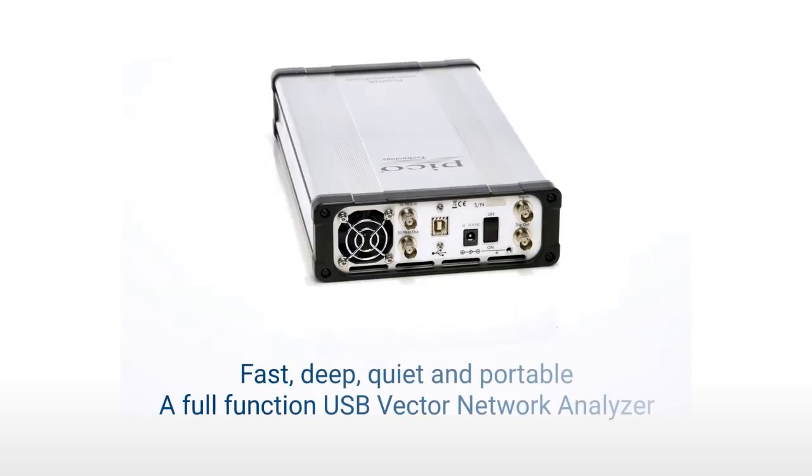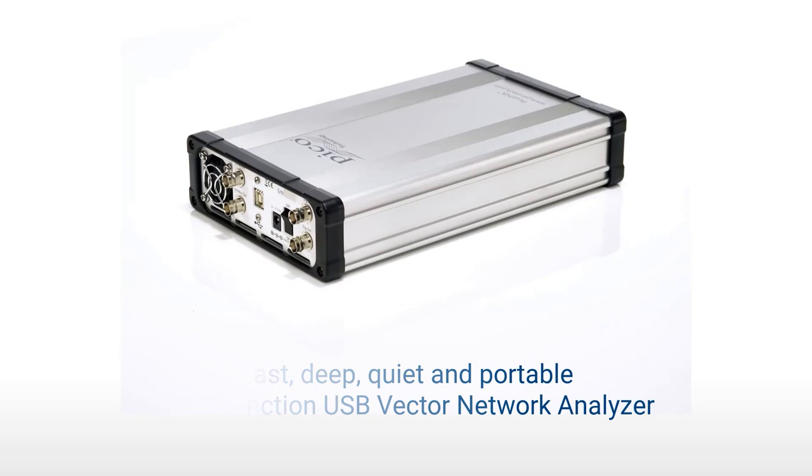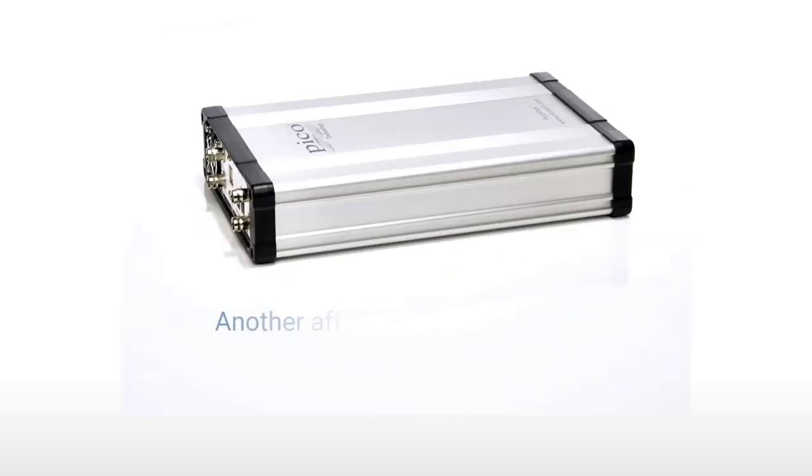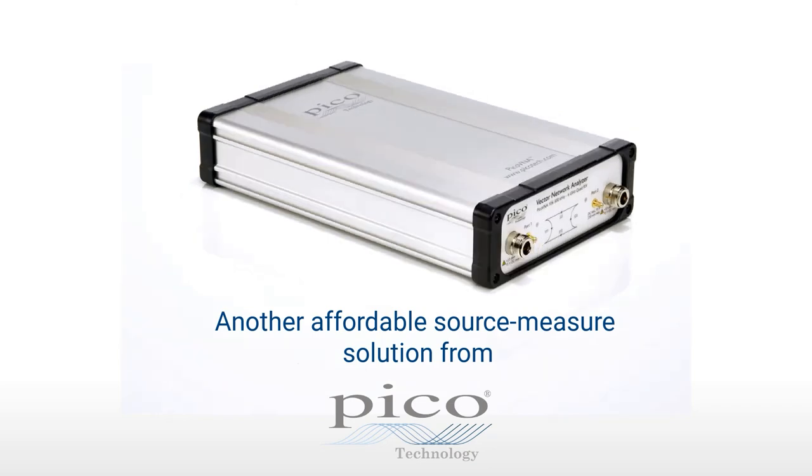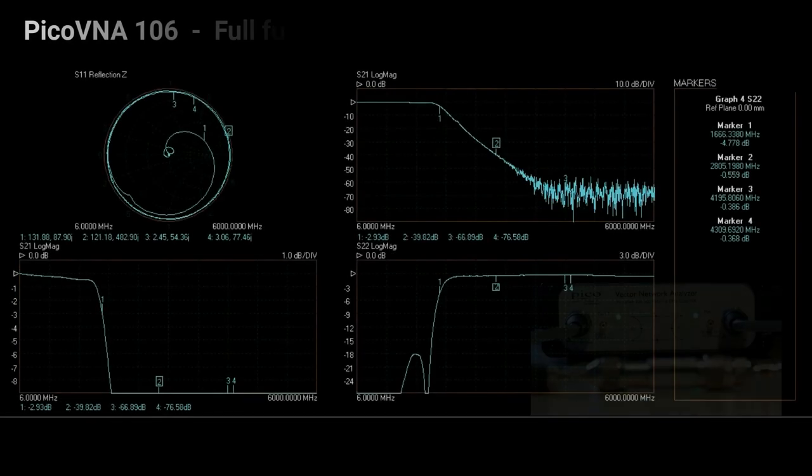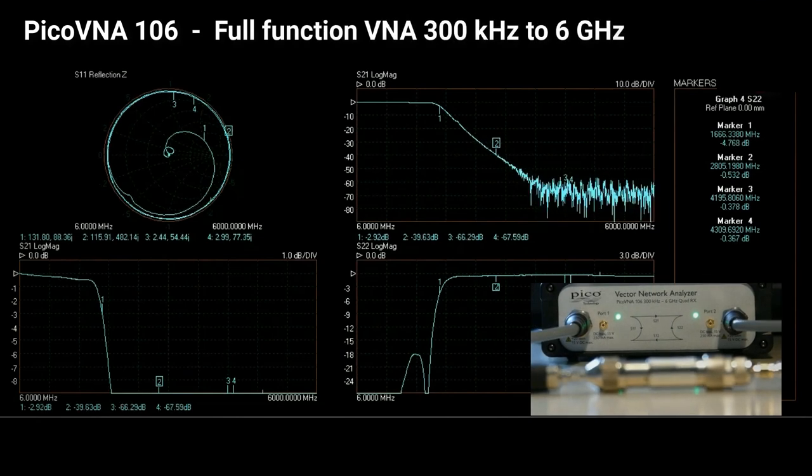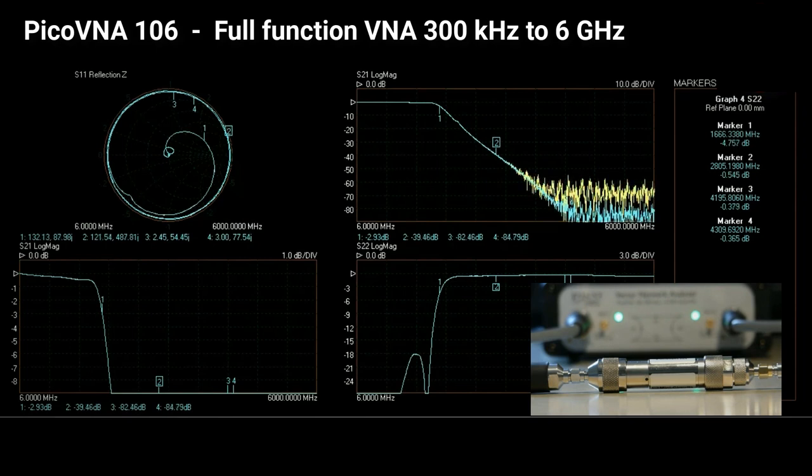Fast, deep, quiet and portable, the Pico VNA 106 despite its small footprint and its low price is a full function, 2 port, bidirectional VNA. With all the measurement and plot formats that you would expect and of course, the PC and monitor of your choice. There's nothing left out here.